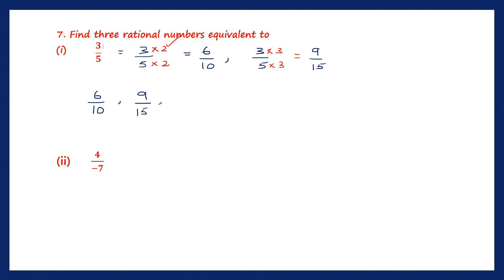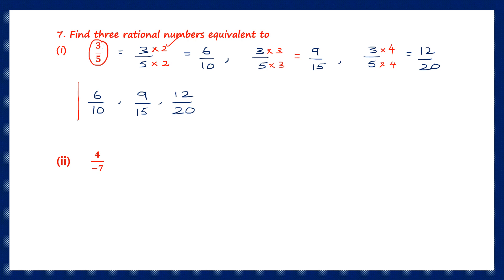To get the third equivalent fraction, multiply 3 by 5 by 4: 3 times 4 is 12, and 5 times 4 is 20. So the third equivalent fraction is 12 by 20. We now have three rational numbers equivalent to 3 by 5: 6 by 10, 9 by 15, and 12 by 20.